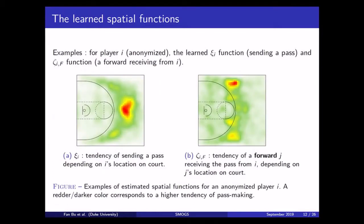So, those are two examples of the learned spatial functions. The left panel shows the sender spatial function for a particular player i. The redder the color is, the higher the send-off tendency is.